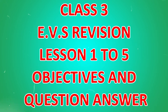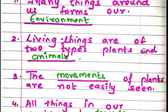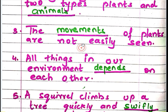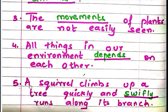Let's start with the fill in the blanks. Number one: many things around us form our — answer: environment. Number two: living things are of two types — plants and animals. Number three: the movements of plants are not easily seen. Number four: all things in our environment depend on each other.